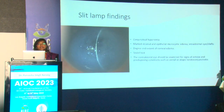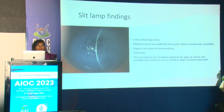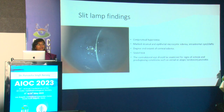Visual acuity is typically decreased and what you see is conjunctival hyperemia. There will be marked stromal as well as epithelial microcystic edema, along with intrastromal cysts or clefts. Corneal edema might be so significant that it limits the view of the posterior cornea, anterior chamber, iris, and lens. The Seidel test could sometimes show positive — not because of perforation but because of transudation of fluid — and IOP may be falsely low.